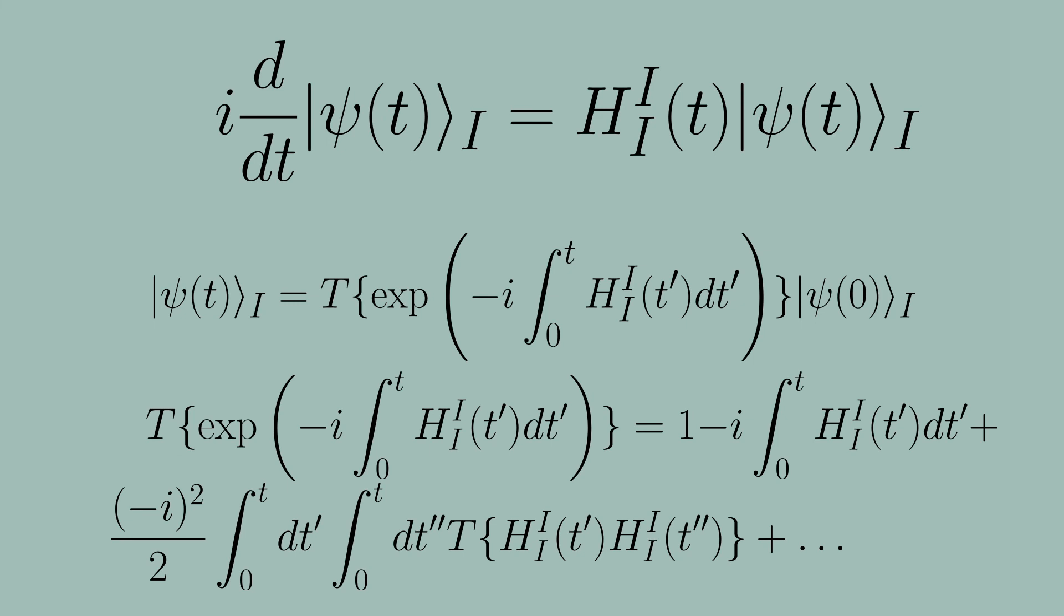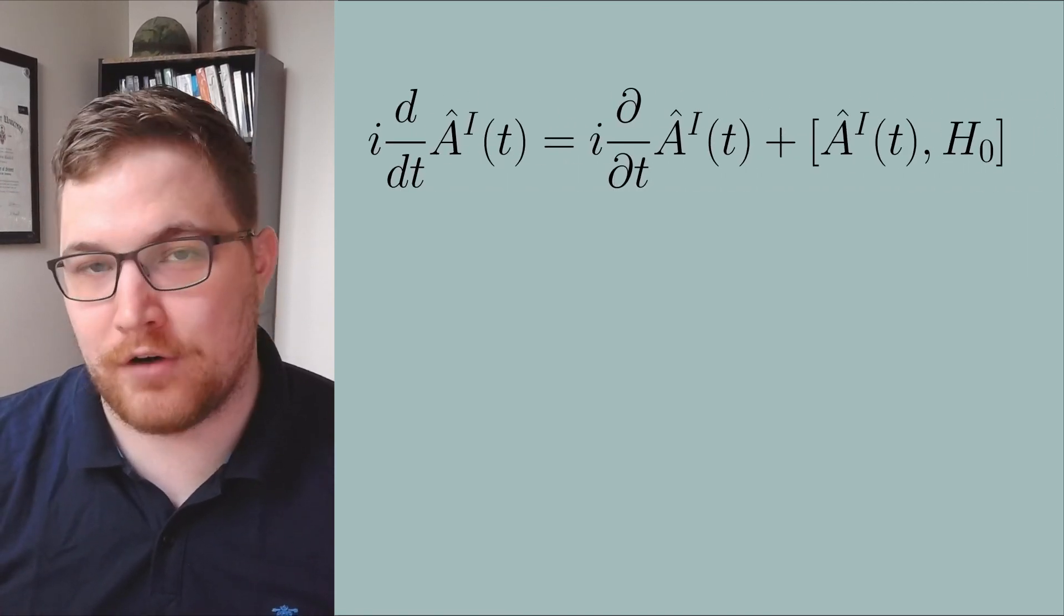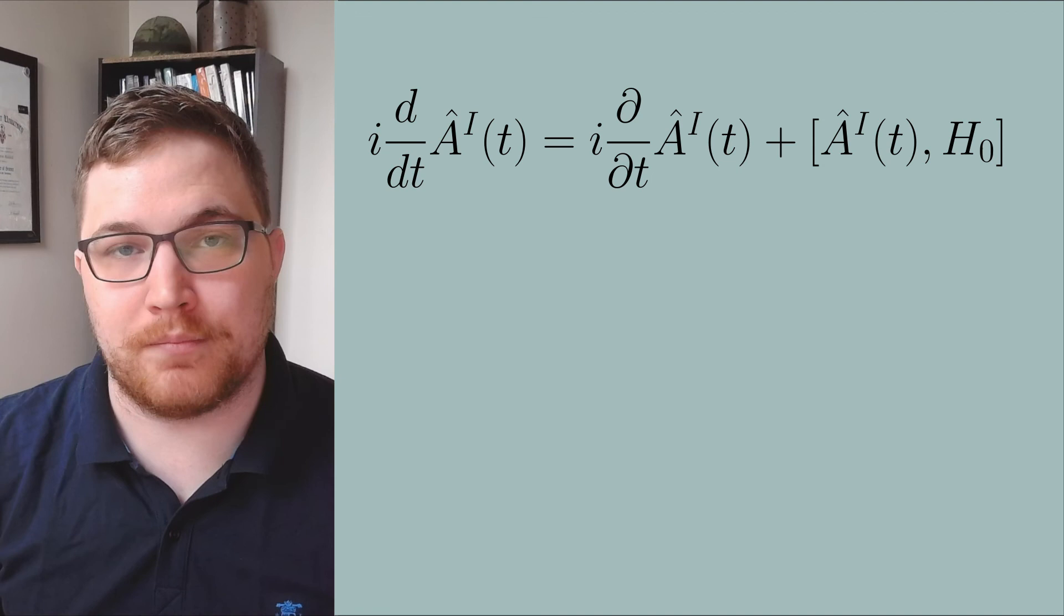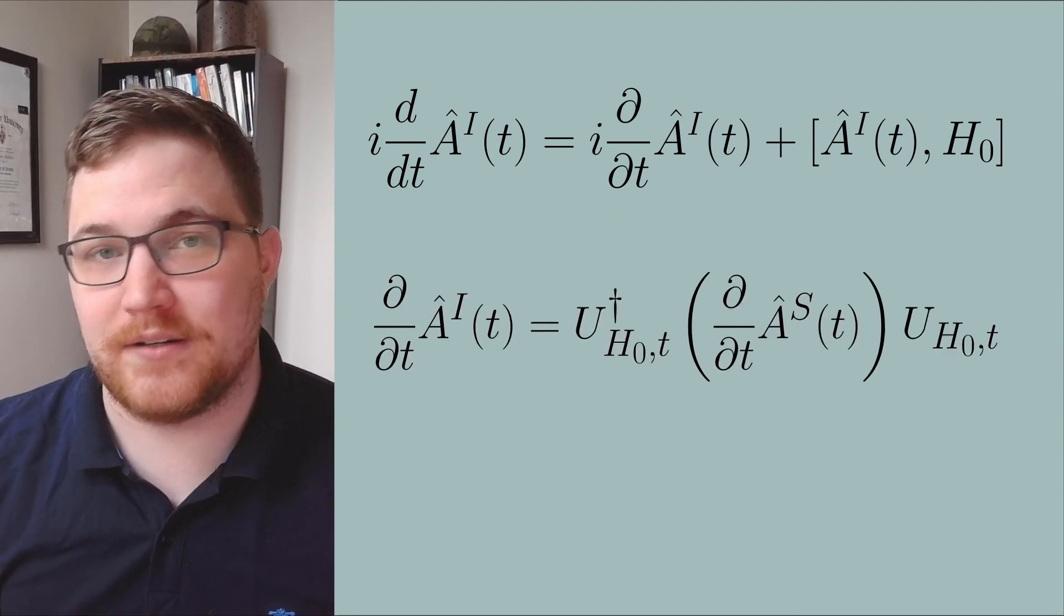Similar to the Heisenberg picture, we can differentiate the definition of the interaction observable in time and arrive at a Heisenberg-like equation for the time evolution of our observable in the interaction picture, where the partial derivative here has the following definition.